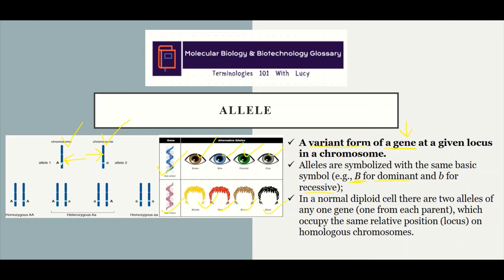Now at any given location, which we call a locus — a genetic locus on homologous chromosomes — is where we find our genes. So for the chromosome that came from your dad, we have that location, and for the chromosome that came from your mom, we have that location. These locations are going to have a gene that codes for the same thing, but in variant or alternate forms.